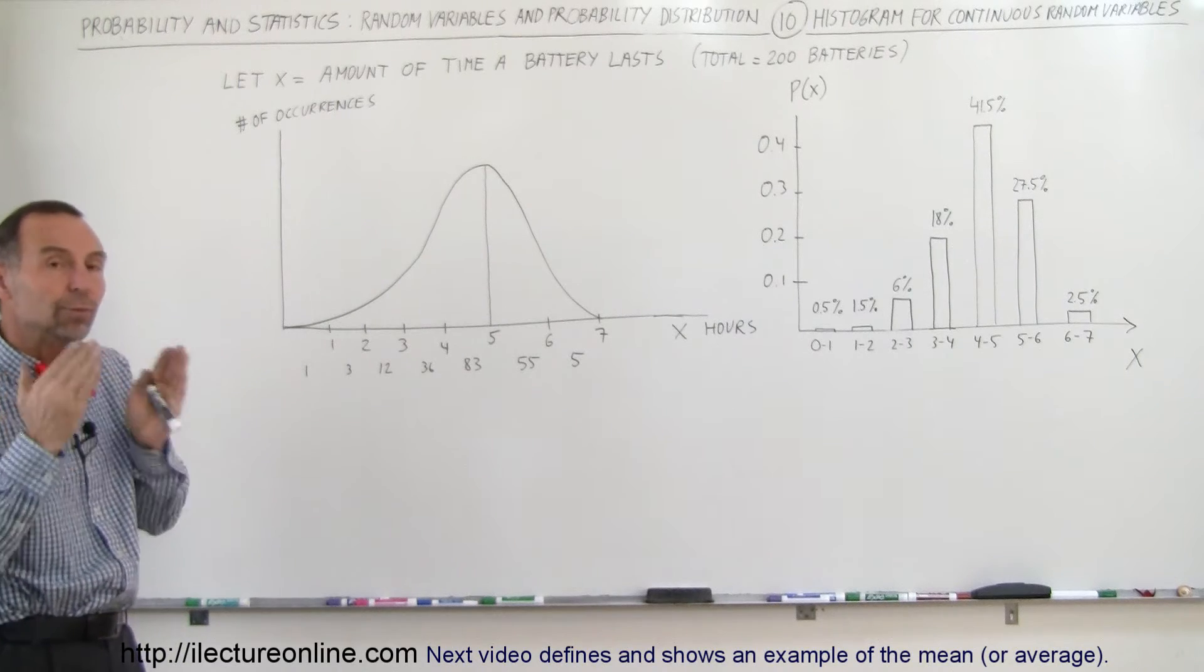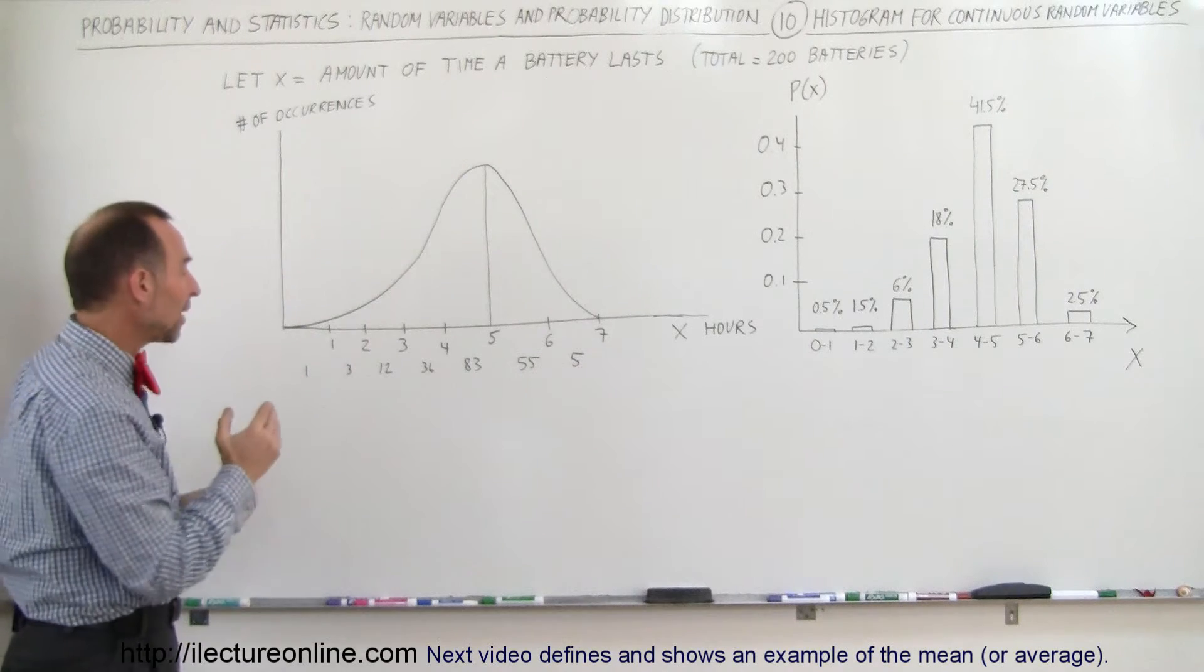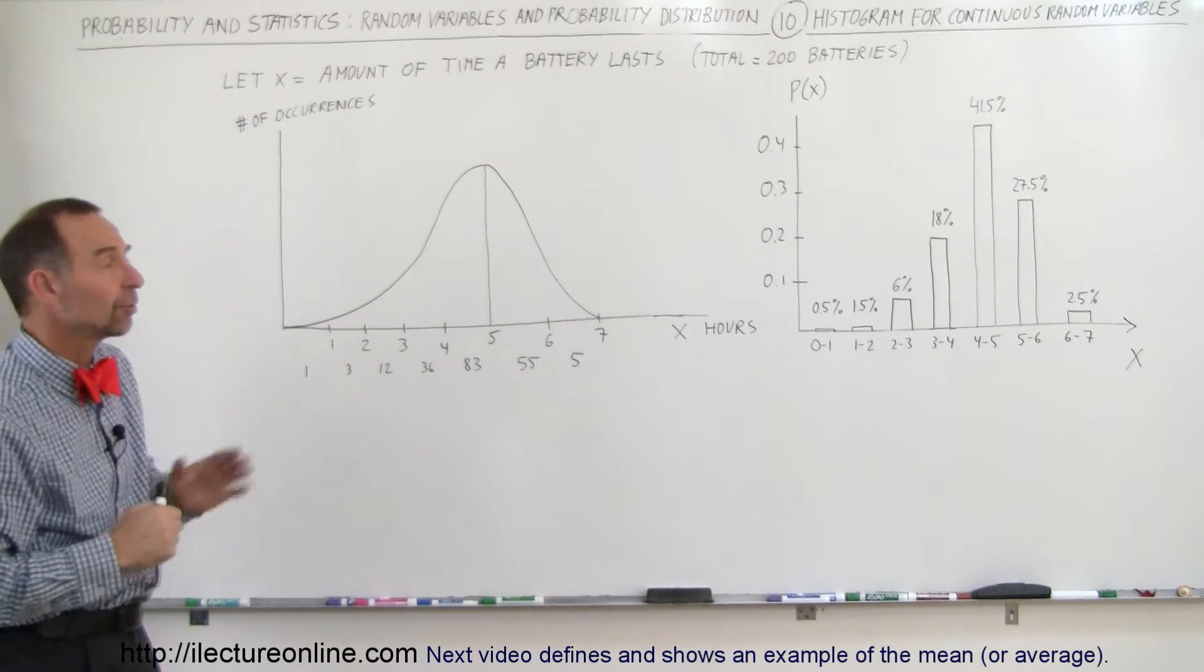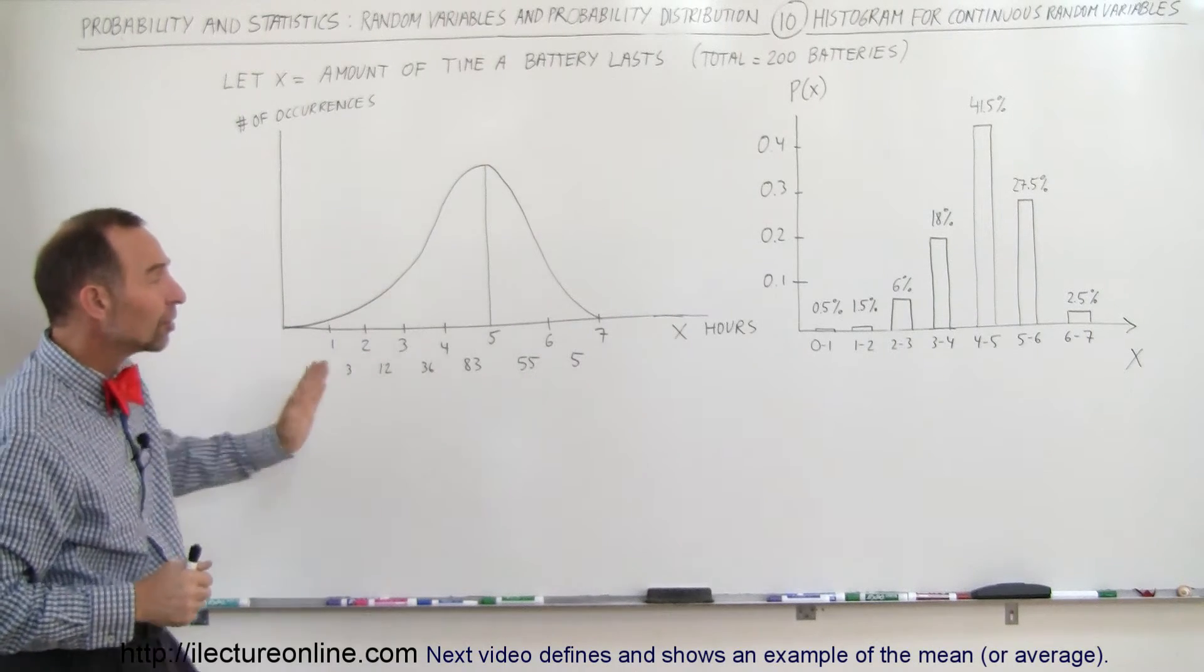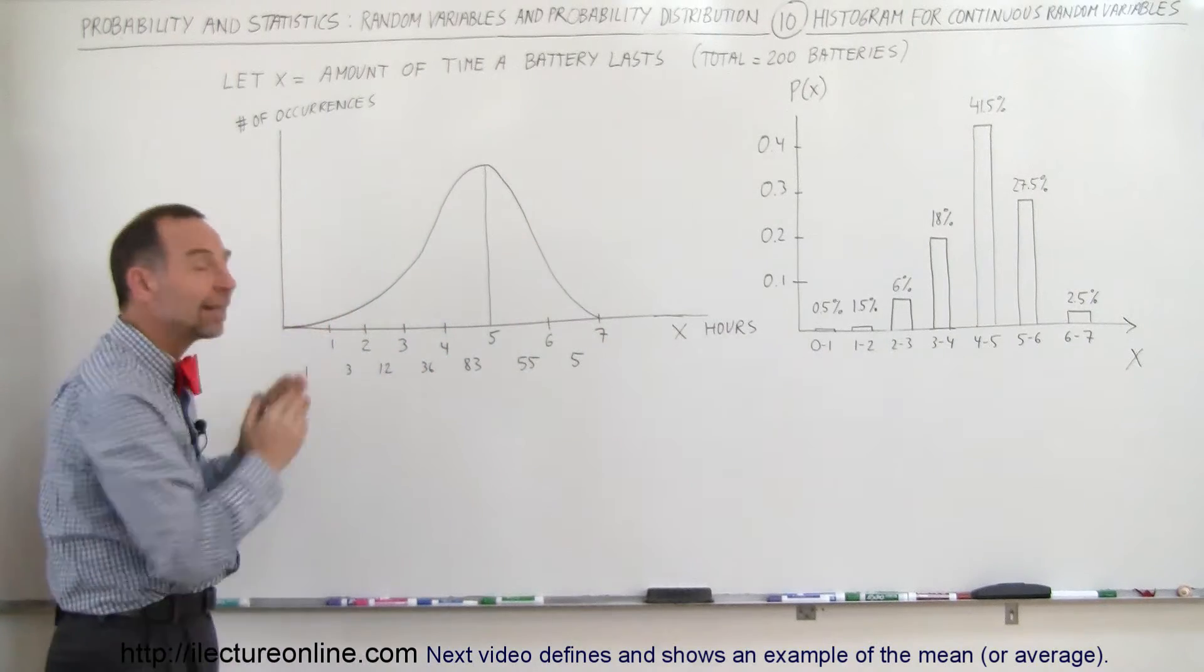Then we group them together: how many batteries lasted from zero to one hour, how many between one and two hours, how many between two and three hours, and so forth. If we do that, we can come up with a certain number of batteries that last within each time period.